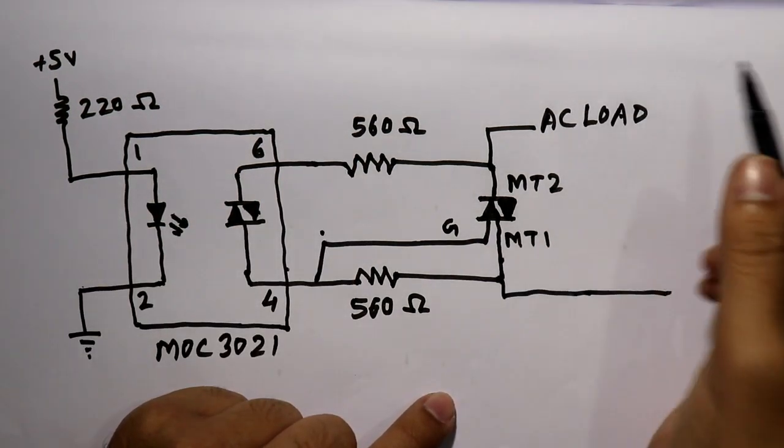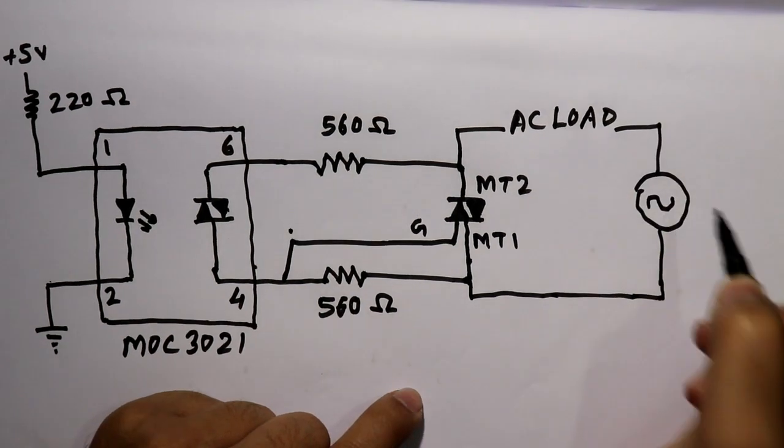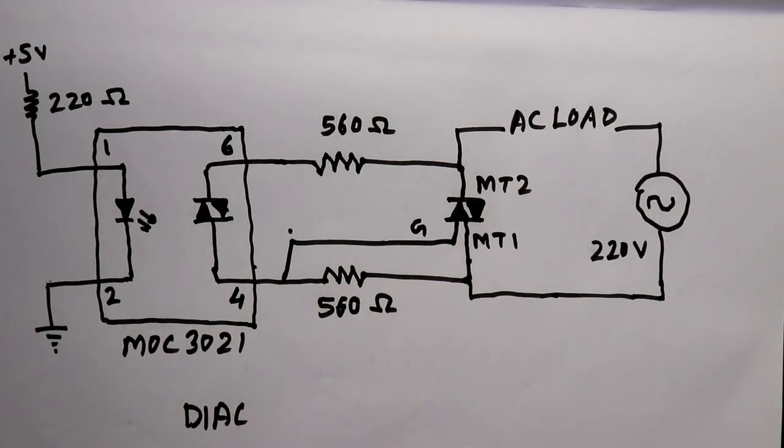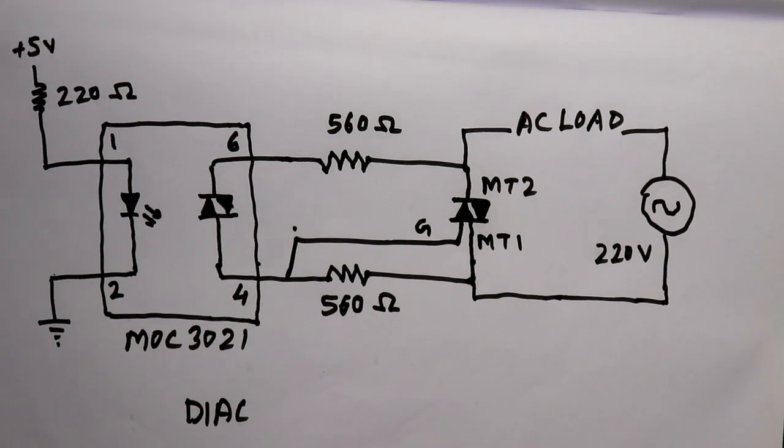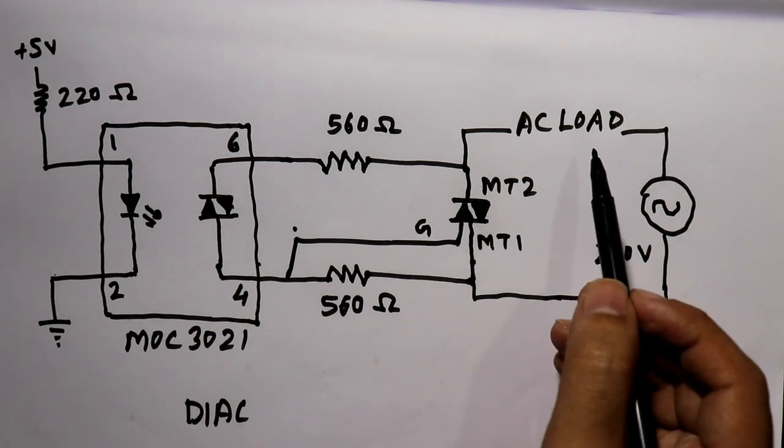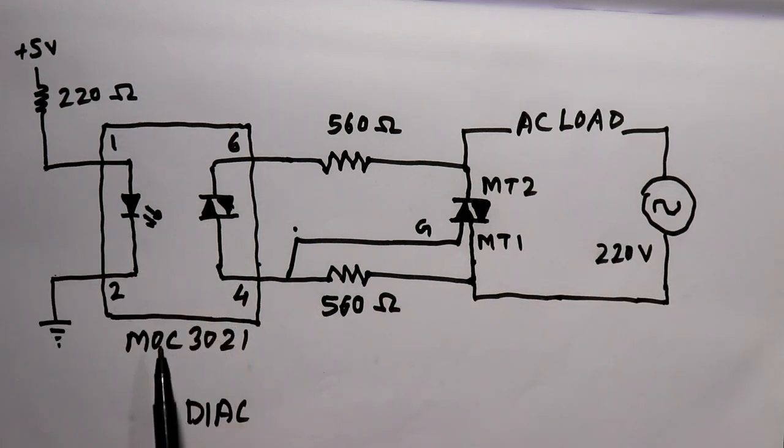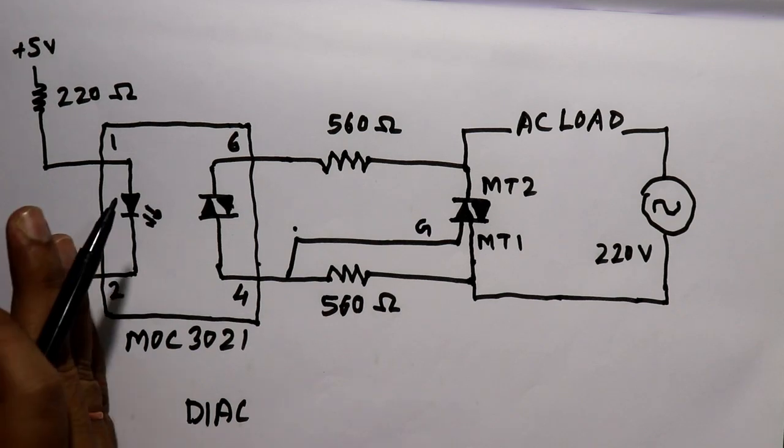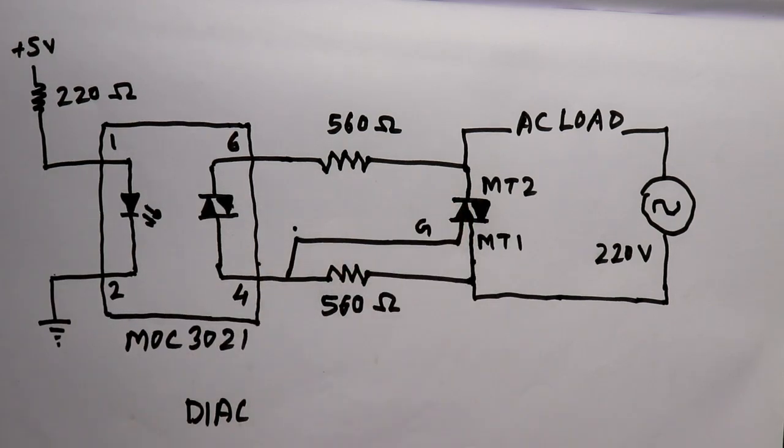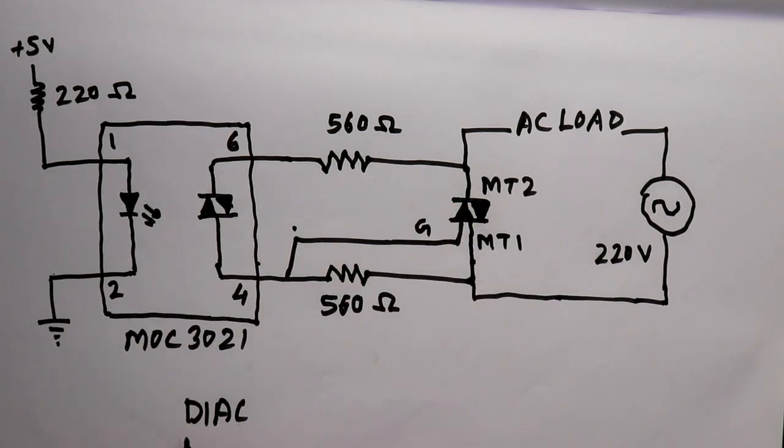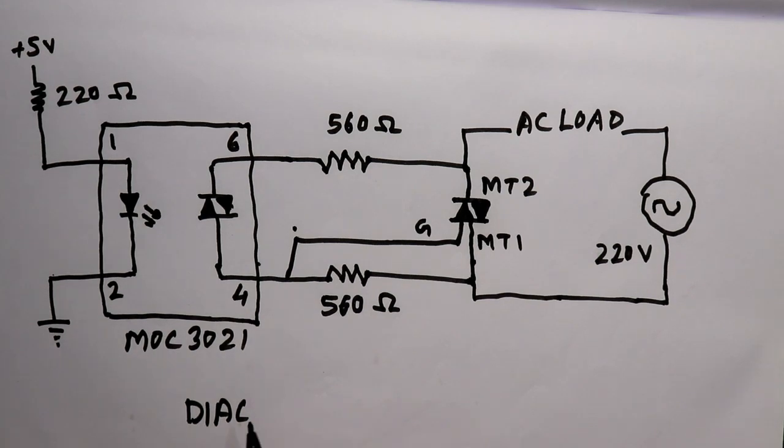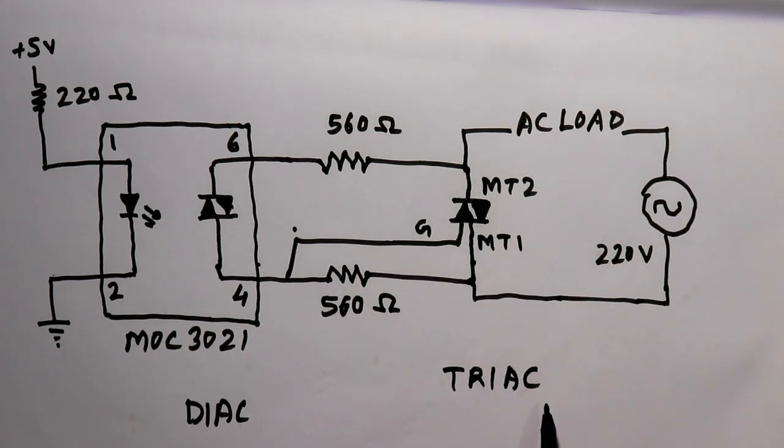This pin is directly connected with AC supply. Here is our AC supply 220 volt AC. So whenever we apply here 5 volt, this load will activate or deactivate depending upon the lower voltage side. So this optocoupler will isolate low voltage from high voltage. As we know, DIAC means diode alternating current, triac means triode alternating current.